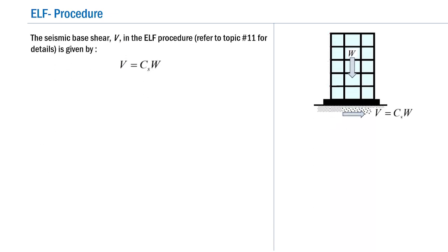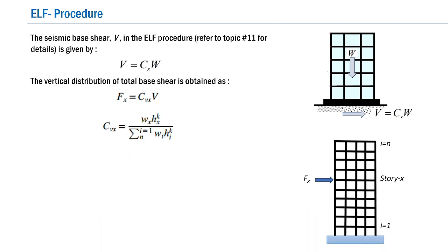Before getting into the details, let me rewind the ELF procedure which we have already discussed in detail in the previous presentations. The equivalent lateral force procedure ELF is essentially a two-stage procedure: in step 1 we compute the total base shear V as V equals CS times W, where W is the total seismic weight; and in step 2 we distribute the computed base shear V along the height of the building using the expression FX equals CVX times V, where CVX is the vertical distribution factor obtained through the equation CVX equals WX times HX raised to K divided by the summation of WI times HI raised to K, for I varying from 1 to N.